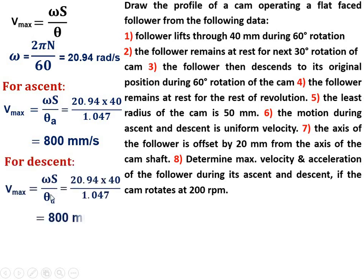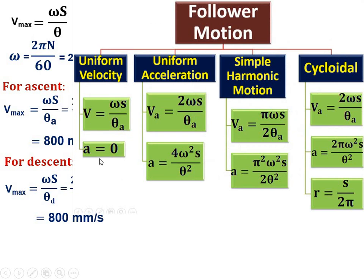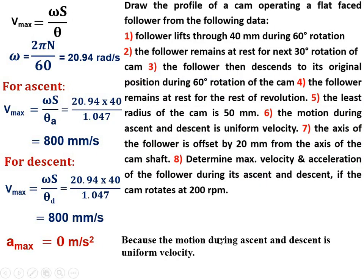For descent, maximum velocity = ω·s / θ_d, where θ_d is the descent angle — here also 60 degrees, the same as θ_a. So the maximum velocity for descent is also 800 mm/s. In the examination, if θ_a and θ_d are different, calculate separately. For maximum acceleration: since the motion is uniform velocity for both ascent and descent, maximum acceleration = 0 for both. Thanks, my friends.